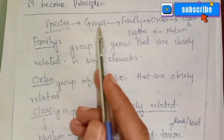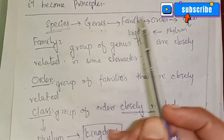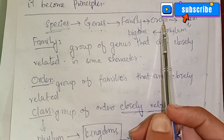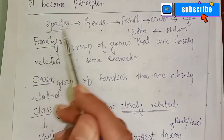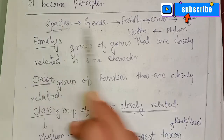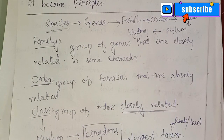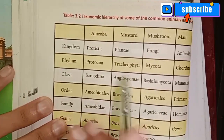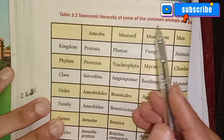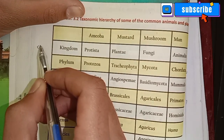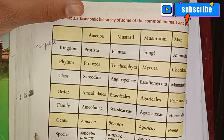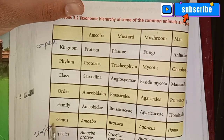Species is closely related to genus; genus is closely related to family; family is closely related to order; order is class; class is phylum; and phylum leads to kingdom. Species is the basic and smallest unit, while kingdom is the largest unit of classification. This is the taxonomic hierarchy.